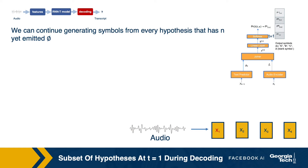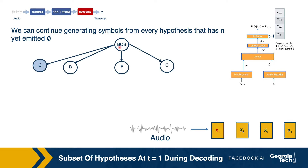Let's look again at all possible hypotheses at a given time frame. We are revising the same concept again. At any time frame, we can generate infinitely many hypotheses. At time frame one, the text history is beginning of sentence. We extended the hypothesis from beginning of sentence — one extension went to the next time frame with the blank, and the other three extensions were with letter B, letter E, and letter C. We are assuming there are just three letters in our language.